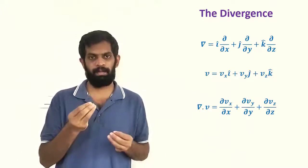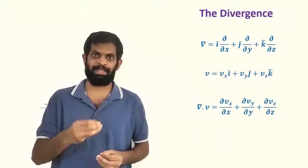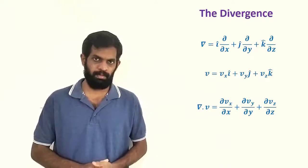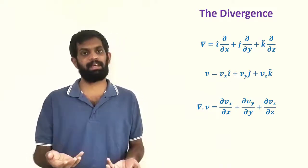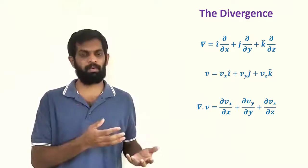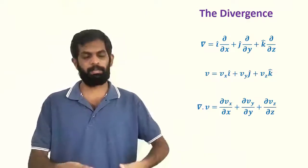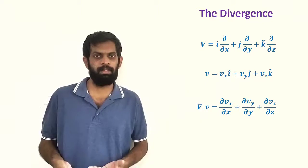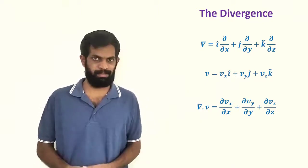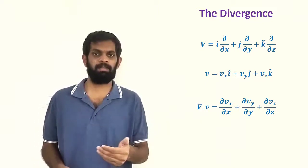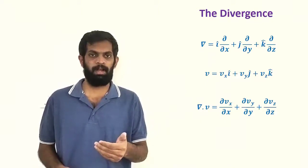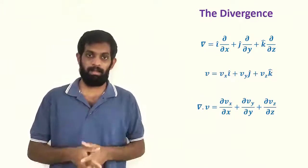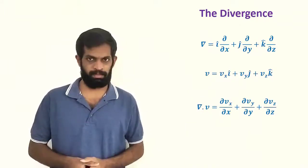If F is a vector function equal to Ax i-cap plus Ay j-cap plus Az k-cap, then the divergence is del dot A. So that is our divergence. Now I am going to discuss the physics of this divergence.